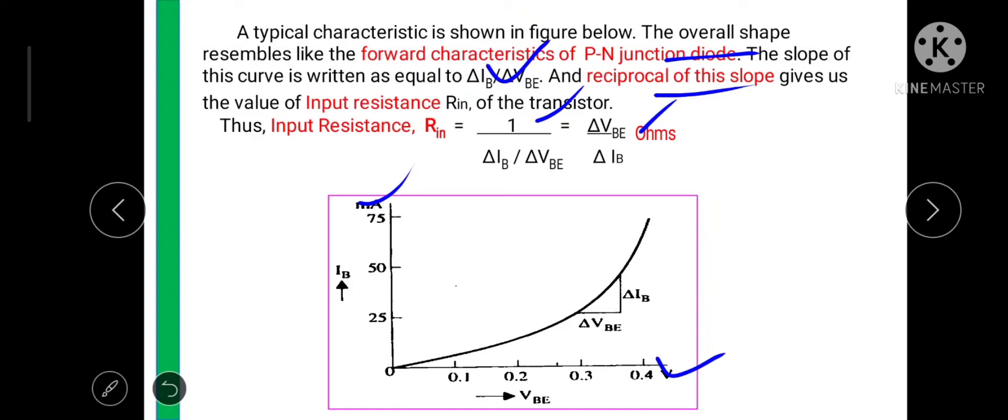And as it is input resistance its unit is ohms. So in short we can say that the input resistance it is nothing but the ratio of input voltage VBE to input current IB. The input resistance Rin is nothing but the ratio of change in input voltage to the change in input current. And its unit is in ohms.